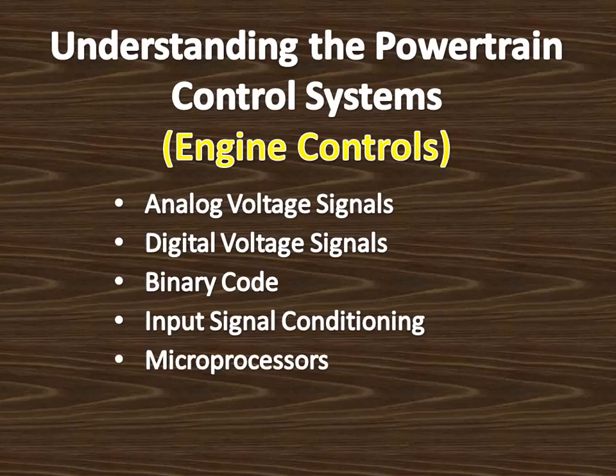The microprocessor is the calculating and decision-making chip in a computer. Millions of miniature transistors and diodes are contained in the microprocessor. These transistors act as electronic switches that are either on or off. The components in the microprocessor are etched on an integrated circuit or IC that is small enough to fit on a fingertip. The silicon chip containing the IC is mounted in a flat rectangular protective box. Metal connecting pins extend from each side of the microprocessor container, connecting the microprocessor to the circuit board in the computer.